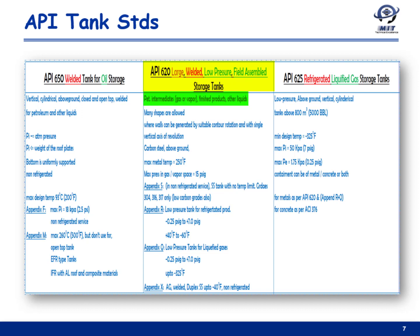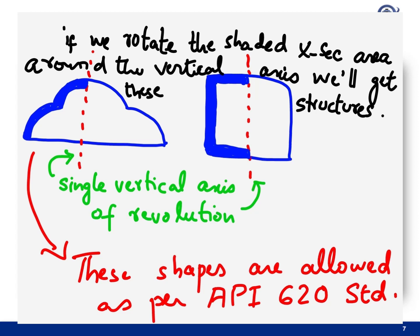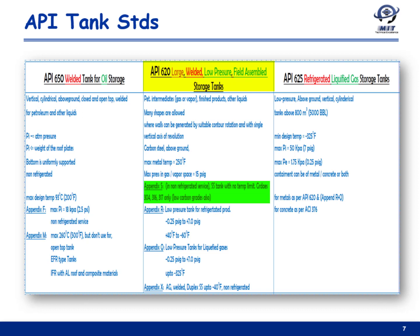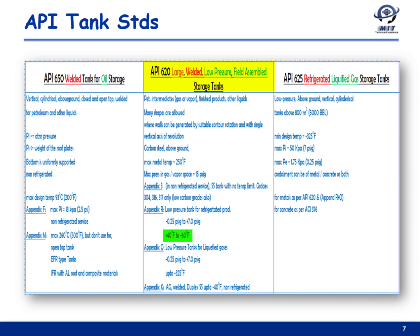API 620 is for hydrocarbon fluids and other fluids in the hydrocarbon industry, though it can be applied elsewhere. Unlike API 650's strictly vertical cylindrical shape, API 620 allows many shapes, provided the wall is produced by rotation of a contour with a vertical axis of revolution. The main standard covers carbon steel material with a maximum metal temperature of 250°F and maximum pressure in the vapor space of 15 psi gauge. Appendix S covers non-refrigerated service for stainless steel grades 304, 316, and 317 (low carbon grades) with no temperature limits.